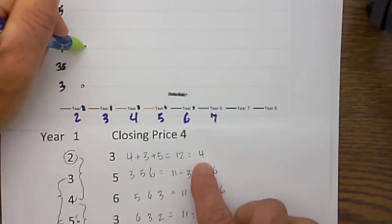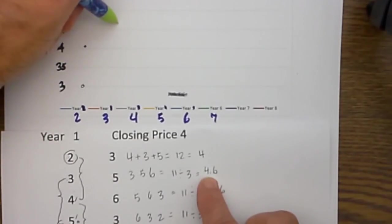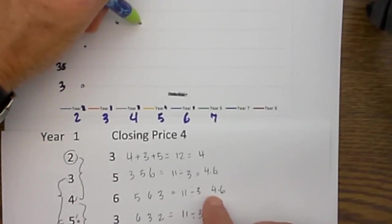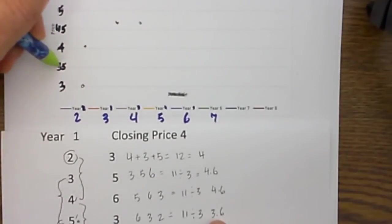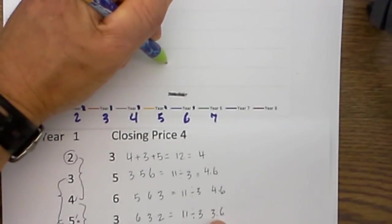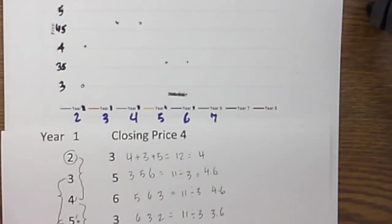And then for year 3 the value is 4.6, so that will be about 4.5, about right there. And then for year 5 we have 3.6,